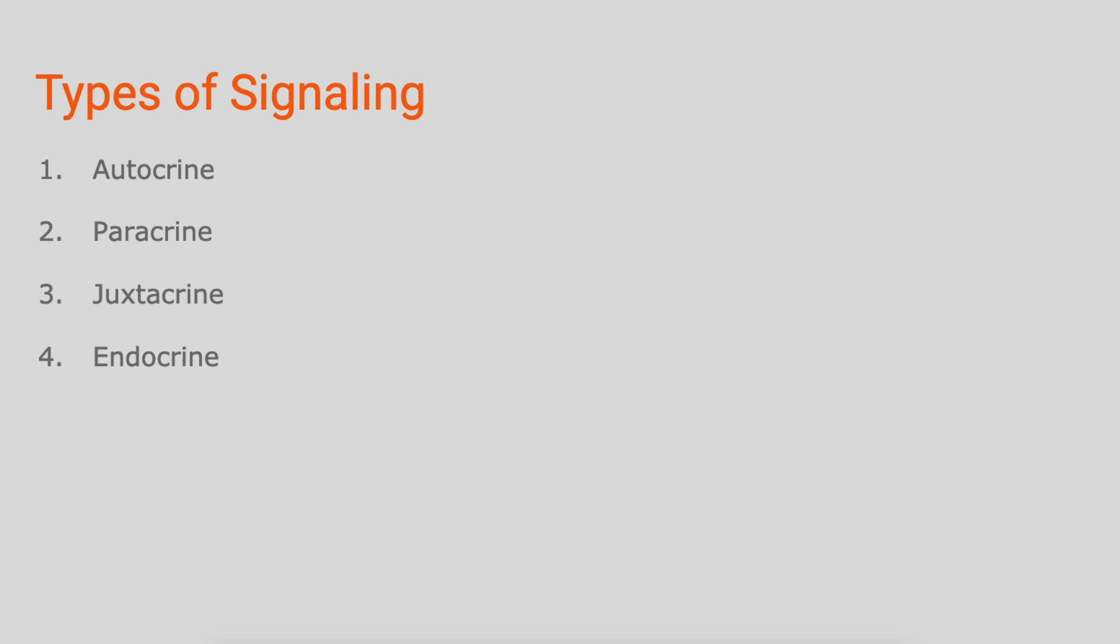These include autocrine signaling, paracrine signaling, juxtacrine signaling, and endocrine signaling. And we're going to go through each of them.